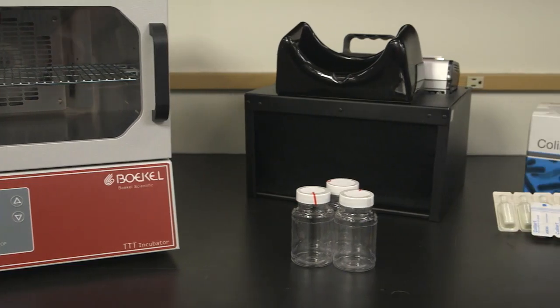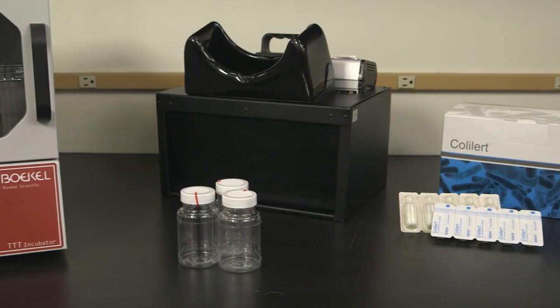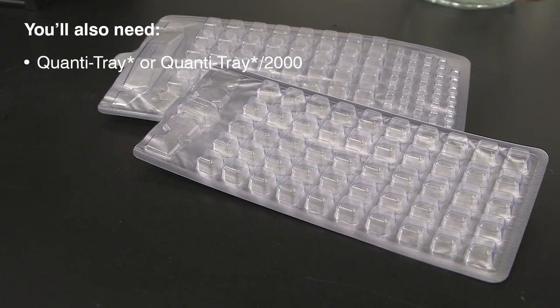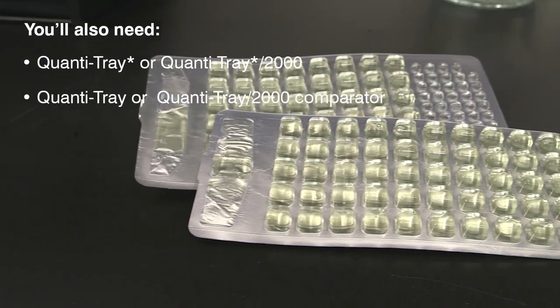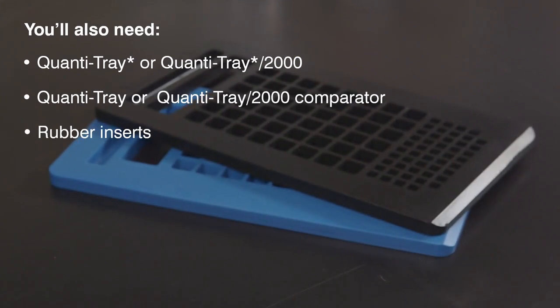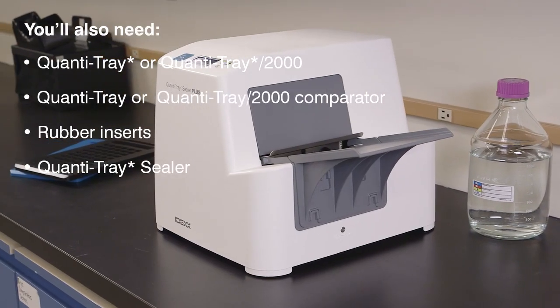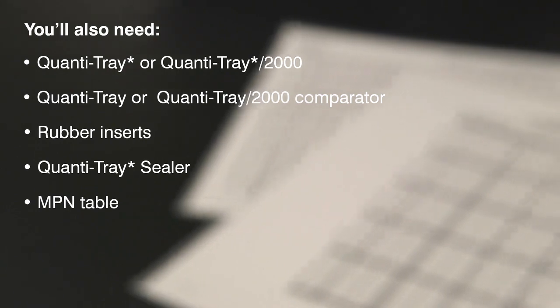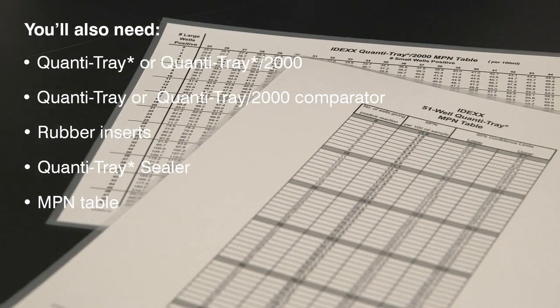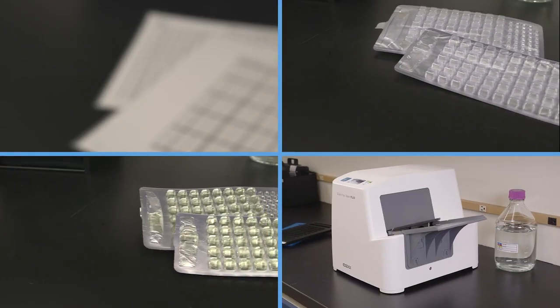In addition to the materials used for presence-absence detection, for quantification, you will need a QuantiTray or QuantiTray 2000, a QuantiTray comparator, QuantiTray rubber inserts, a QuantiTray sealer, and the included most probable number table, or the IDEX automated MPN generator program found at IDEX.com. All of these items are included in the QuantiTray system and are available from IDEX.